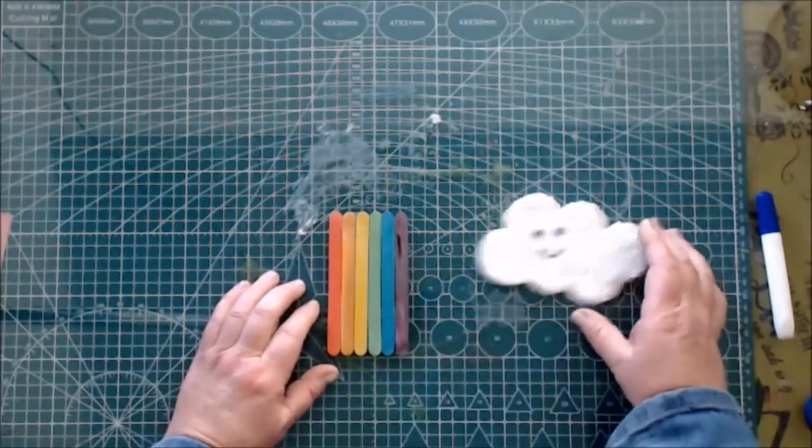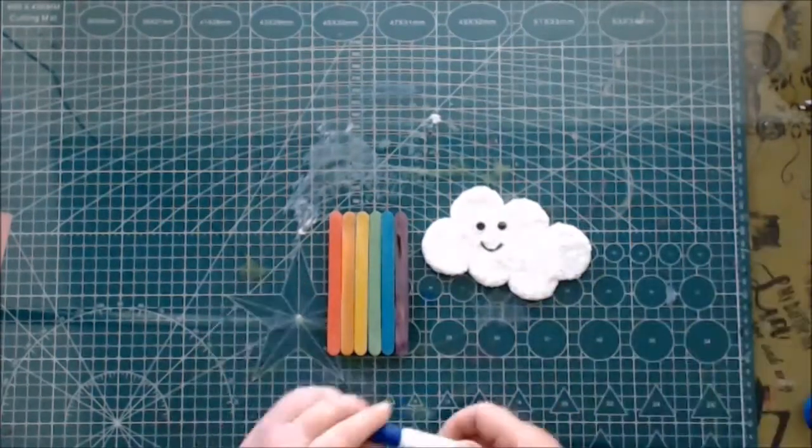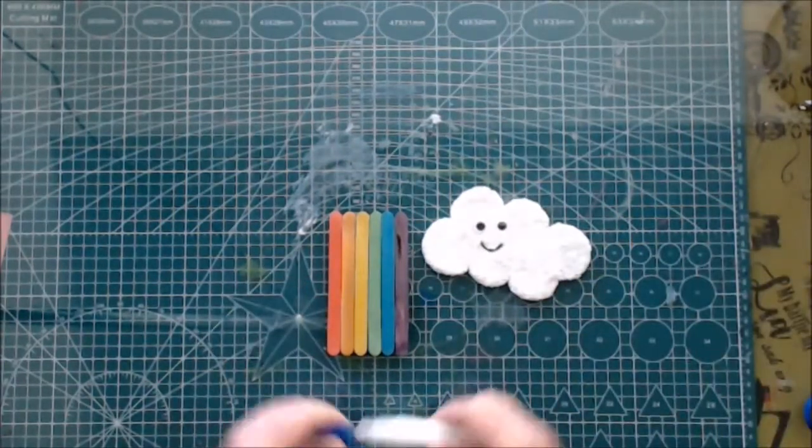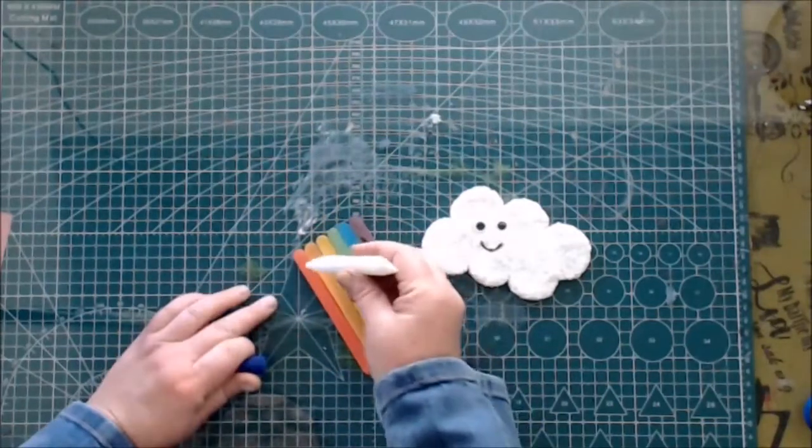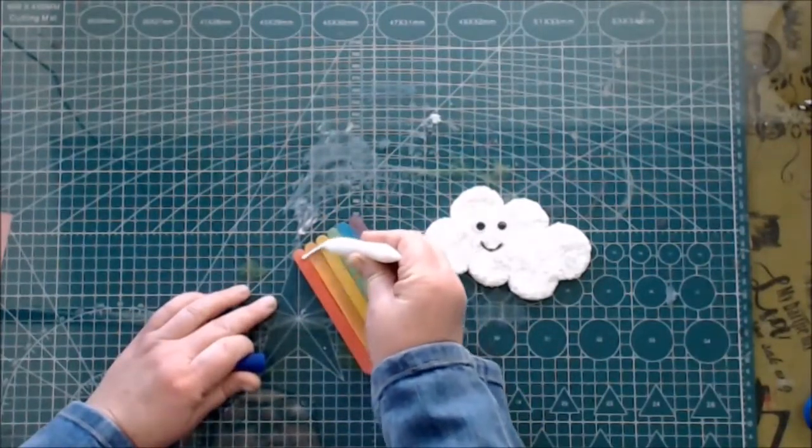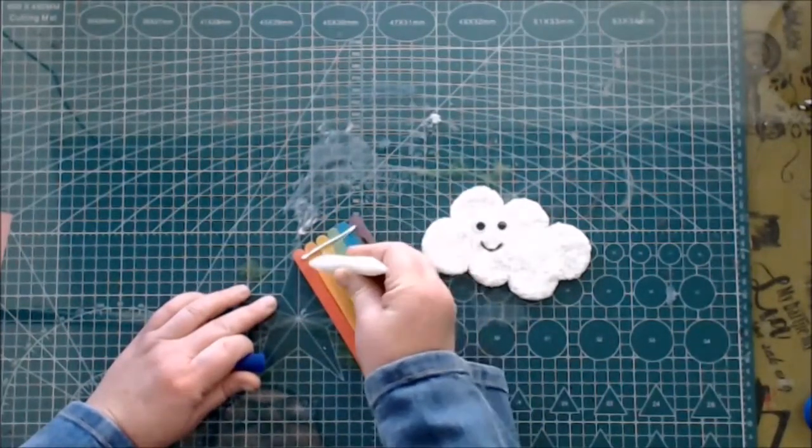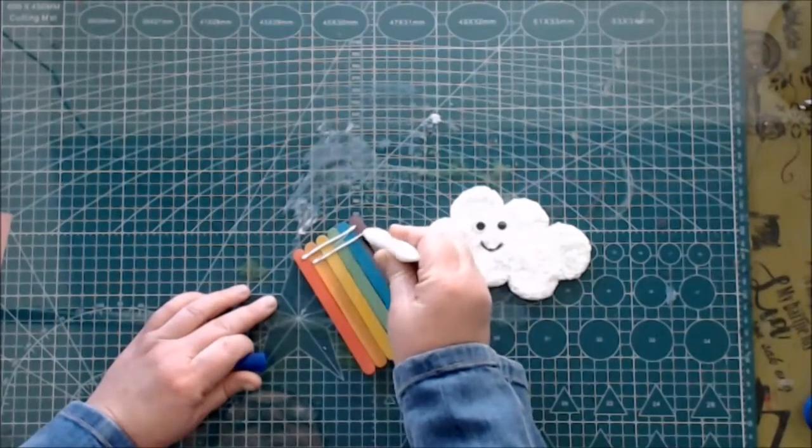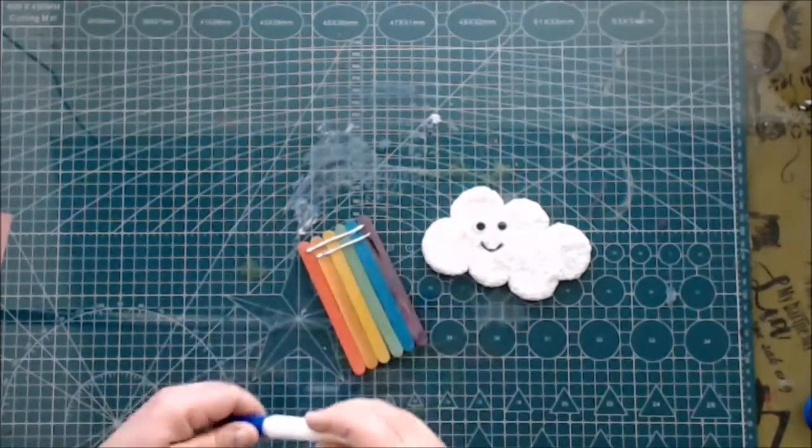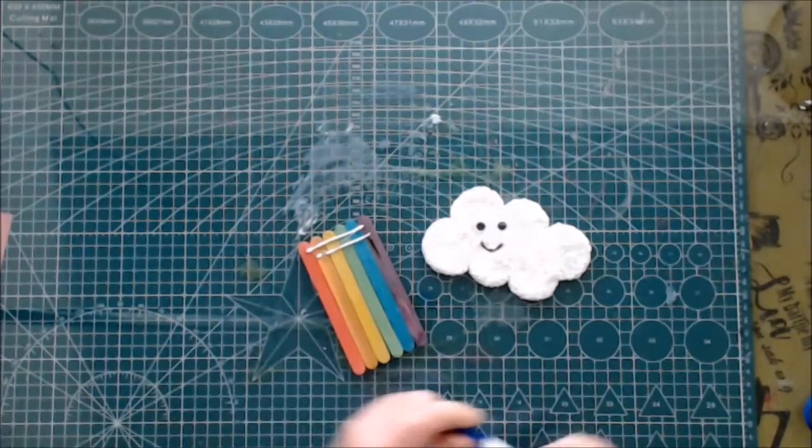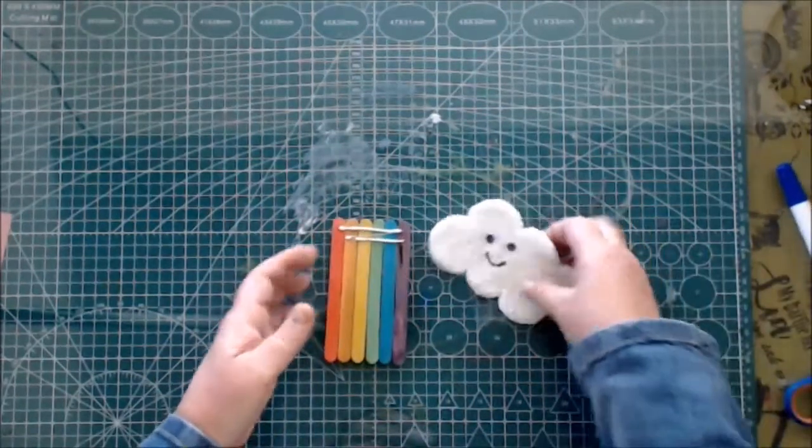The back popsicle sticks and the magnet is dry. I have turned it around and there I have got the colors of the rainbow. I am adding some glue to the top so that we can glue the cloud to our rainbow.